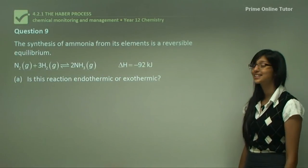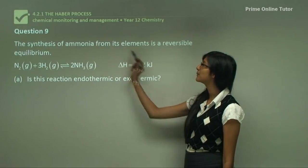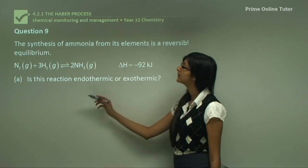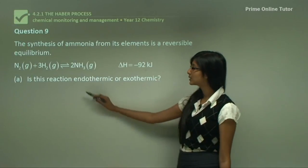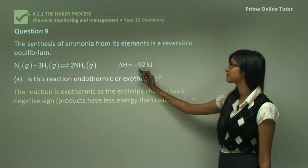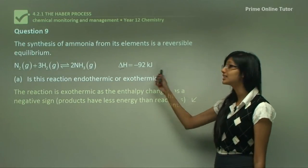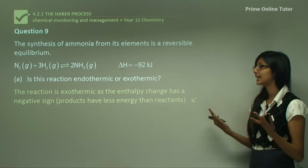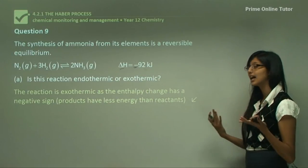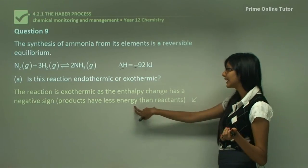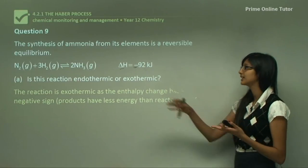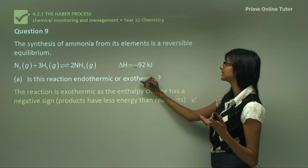Question 9 states that the synthesis of ammonia from nitrogen and hydrogen is a reversible equilibrium. Is the reaction endothermic or exothermic? The enthalpy change is −92 kJ, which tells us it is an exothermic reaction. The negative sign indicates that the products have less energy than the reactants because energy is released during the reaction, hence it is exothermic.